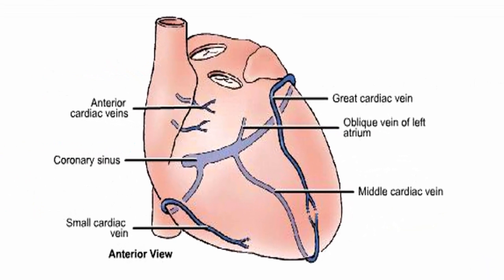This is the coronary sinus. A small cardiac vein drains into the coronary sinus, as does the great cardiac vein, the middle cardiac vein, and the oblique cardiac vein. The anterior cardiac vein, however, drains directly into the right atrium of the heart.